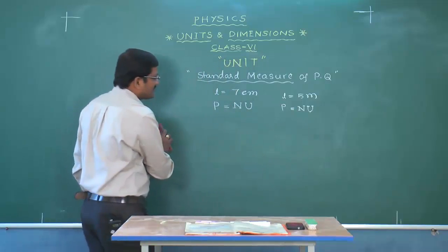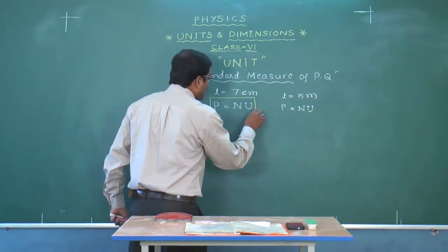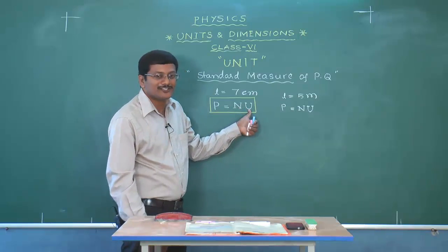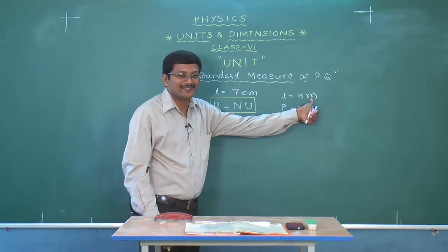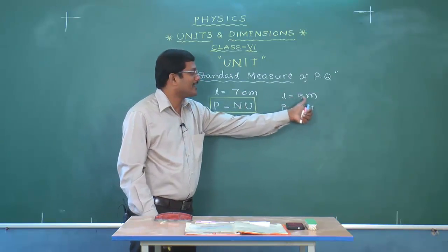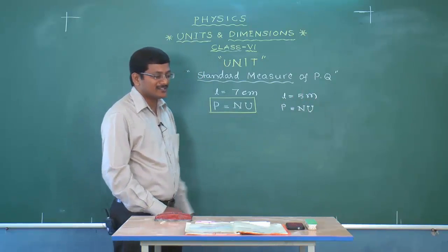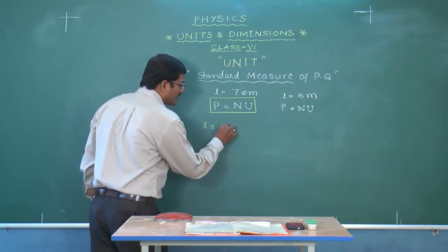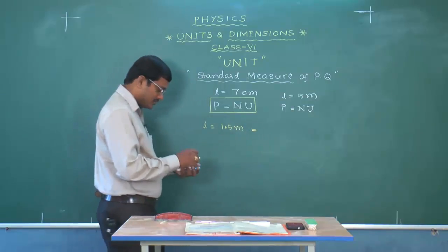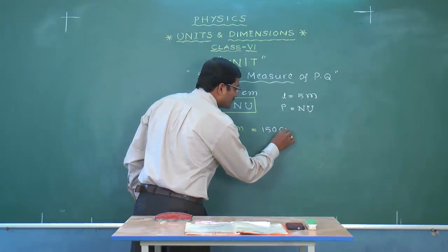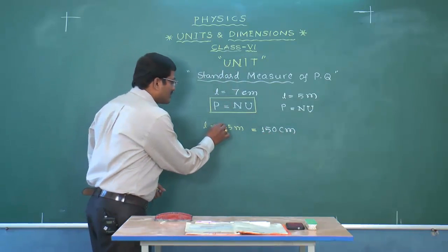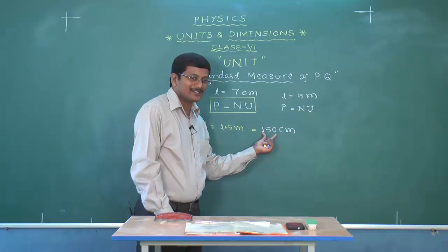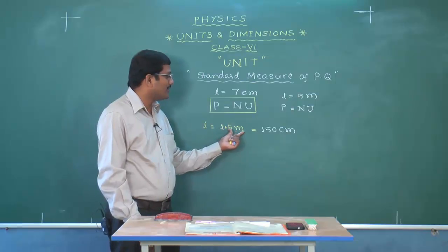A physical quantity is expressed as a numerical value followed by a unit, but the physical quantity itself does not change with the choice of unit. For example, L = 1.5 meters is the same as L = 150 centimeters. Students sometimes mistakenly think 150 centimeters is a bigger quantity than 1.5 meters, but both are equal.